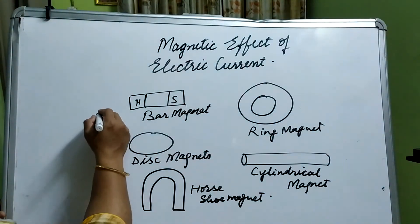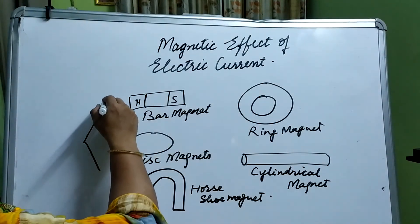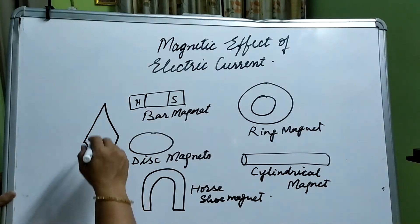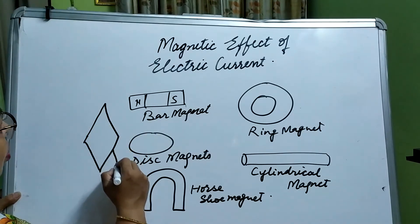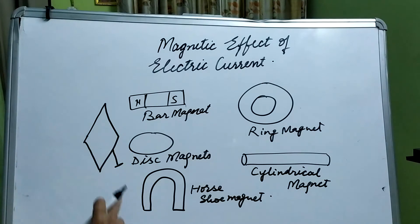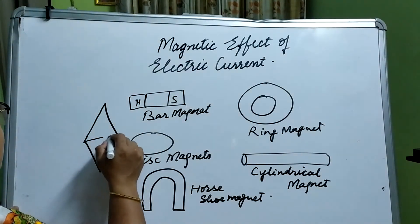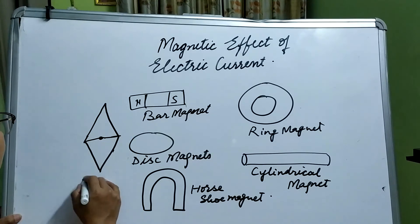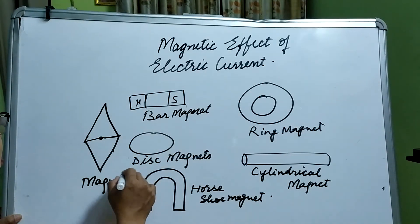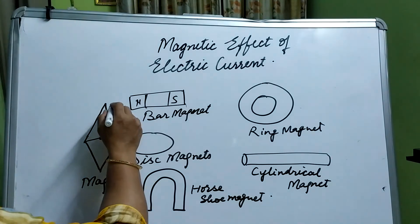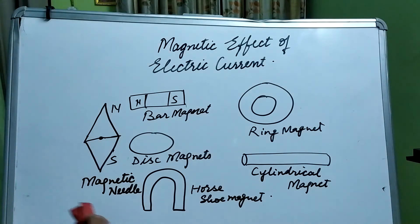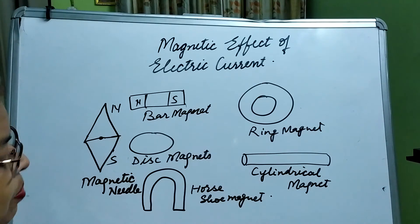Artificial magnets are also found in the form of a needle, which is rhombus-shaped and pivoted on an axis so it can freely rotate and keep moving. Such magnets are known as magnetic needles. A magnetic needle is used in a magnetic compass, which aligns itself towards the north-south direction.